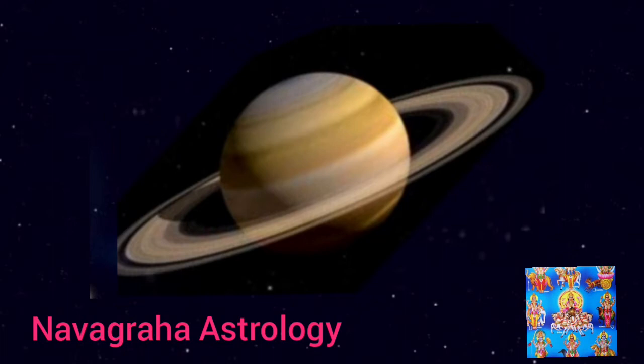Now we will look at the first Antar Dasha of the Saturn Dasha. The planetary period of Saturn extends for 19 years, and this applies for everyone. During those 19 years, planet Saturn plays a very big role in shaping a person's life. However, other planets also play a minor role, especially during their own subperiods, and those subperiods are called Antar Dashas.